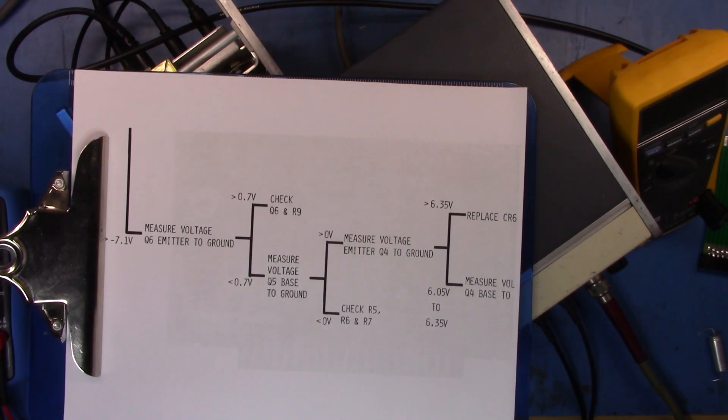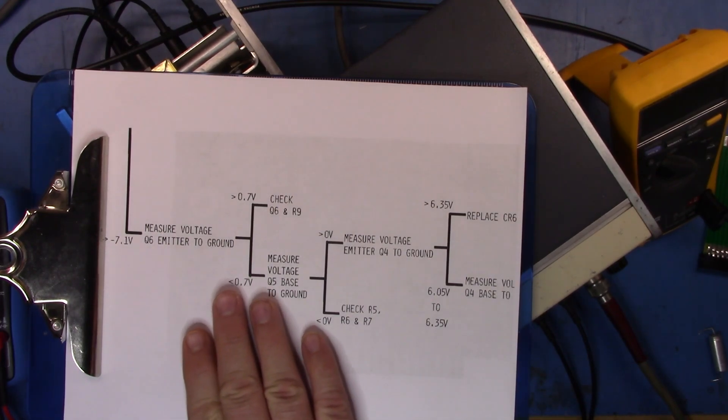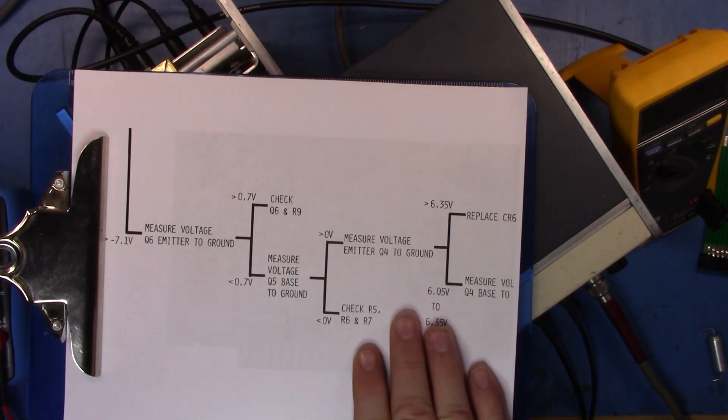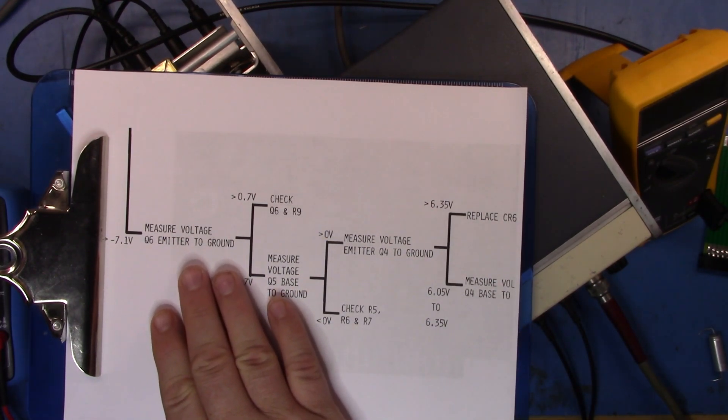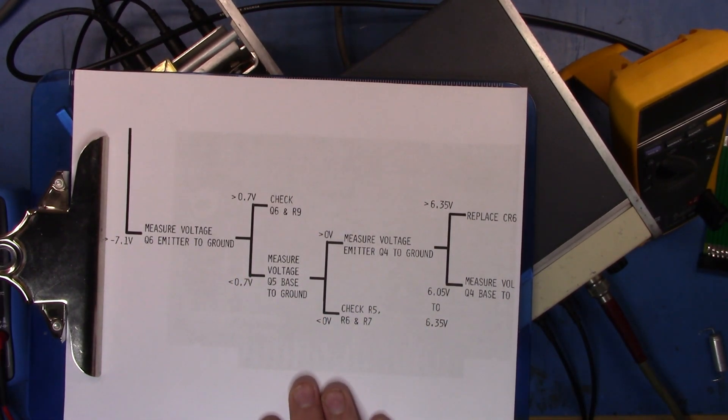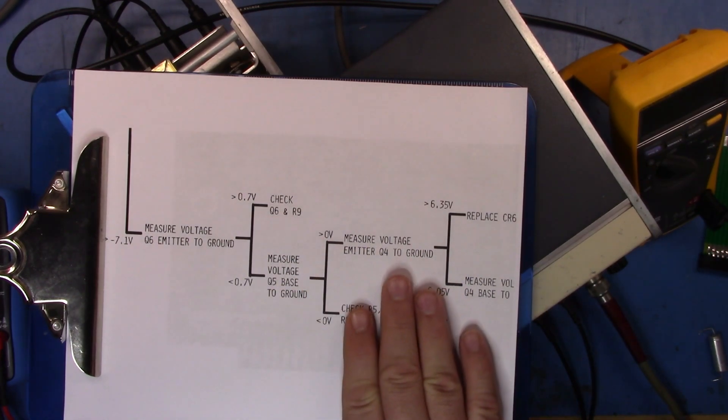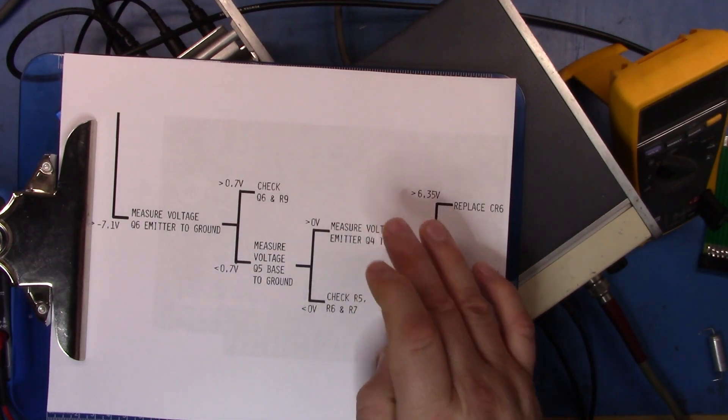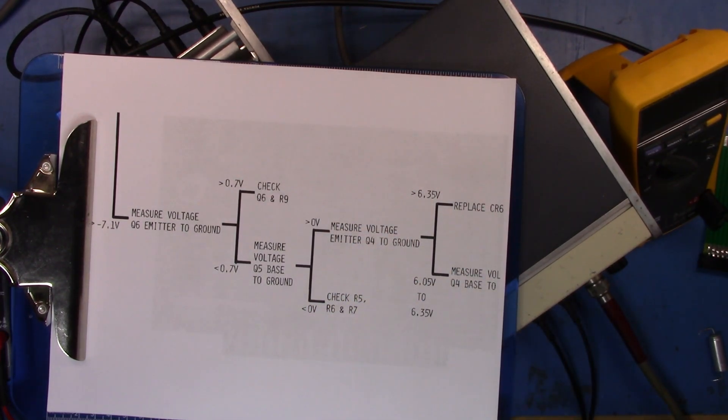So I went in to start checking to find where the problem could be, and going through the power supply troubleshooter, I looked at emitter to ground on Q6 and it was less than 7 volts so that was going to take us to the next step. Well this next step as you can see here is greater than zero or lower than zero. Well what I actually found was that that voltage was pretty much bang on zero so it could be one or the other, it was unclear.